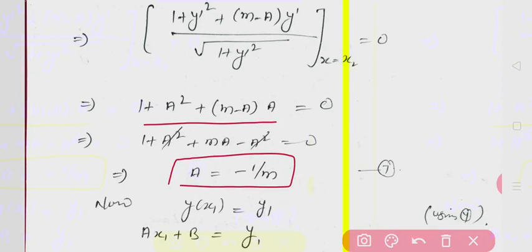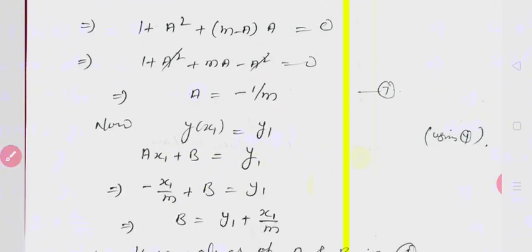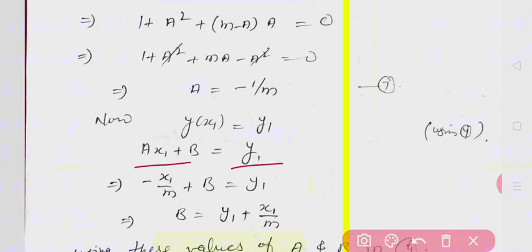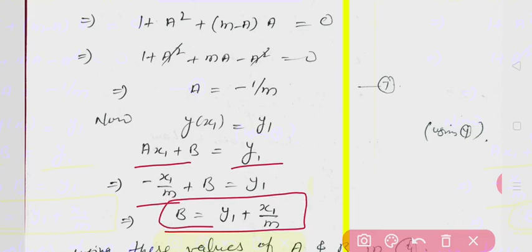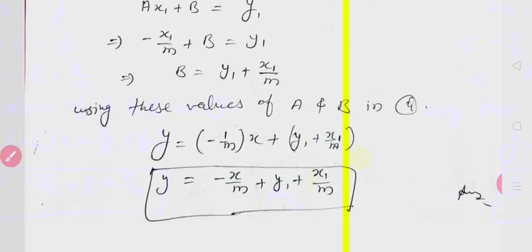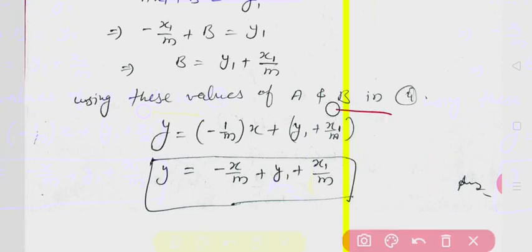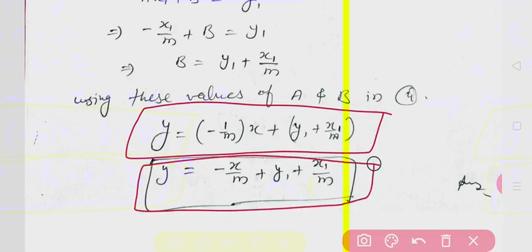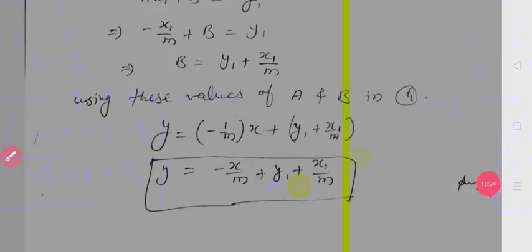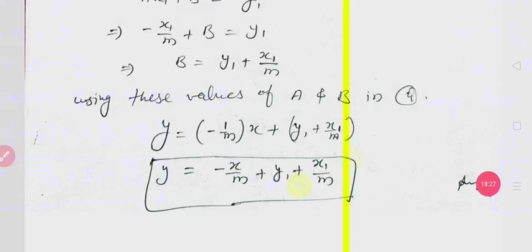With a = -1/m, and using y(x1) = y1 = a*x1 + b, we can solve for b. So the unknown function y has been found — this is the curve from the fixed point to the given line that gives the minimum length among all curves. This completes our lecture. The next topic will be discussed in the next class. Thank you very much, students.